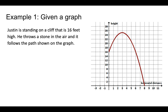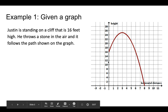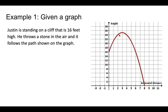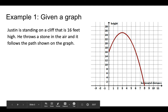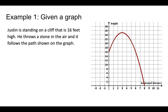So let's say we have Justin. He's standing on a cliff and the cliff is 16 feet high. We have horizontal distance on the x-axis and vertical height on the y-axis. We're going to put the cliff at zero horizontal distance just because it's easier, and he's starting at a height of 16 feet. From 16 feet, he throws a stone in the air, and then it follows this path and lands on the ground. Now we're going to go through a bunch of questions you could be asked about this type of situation.